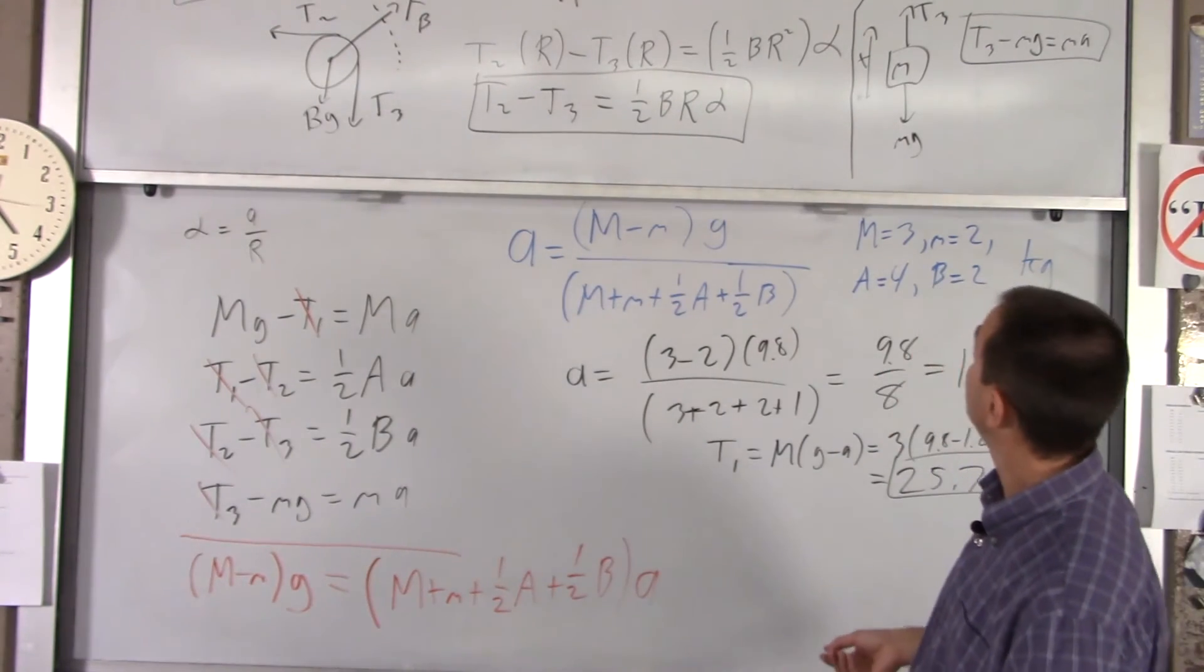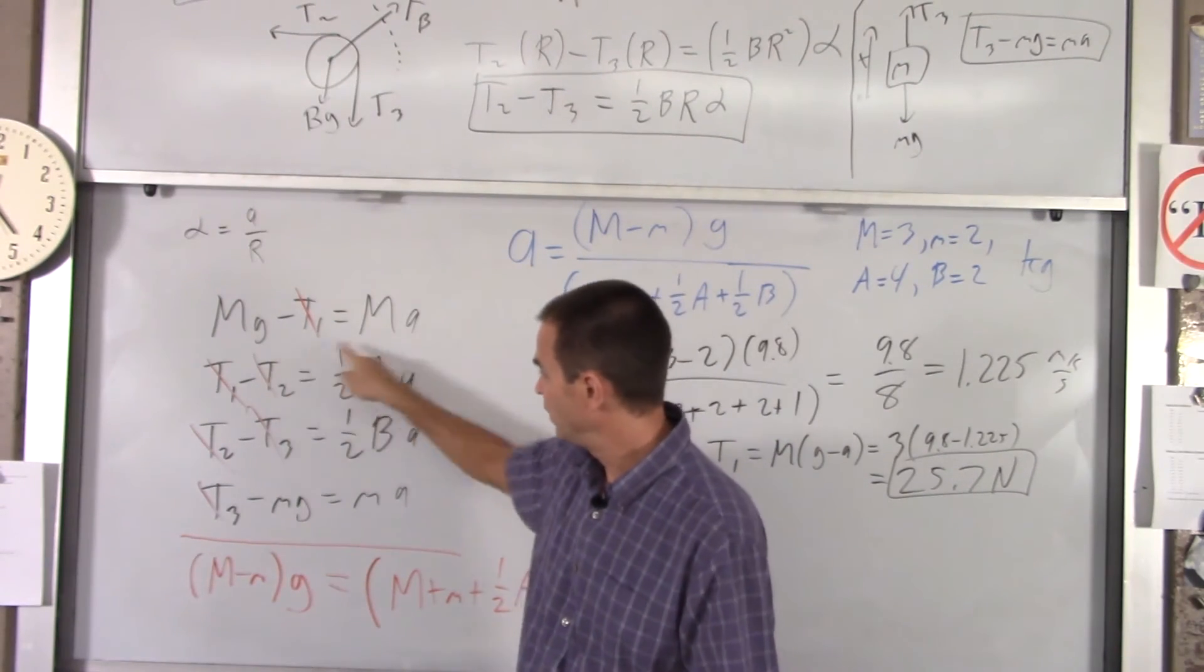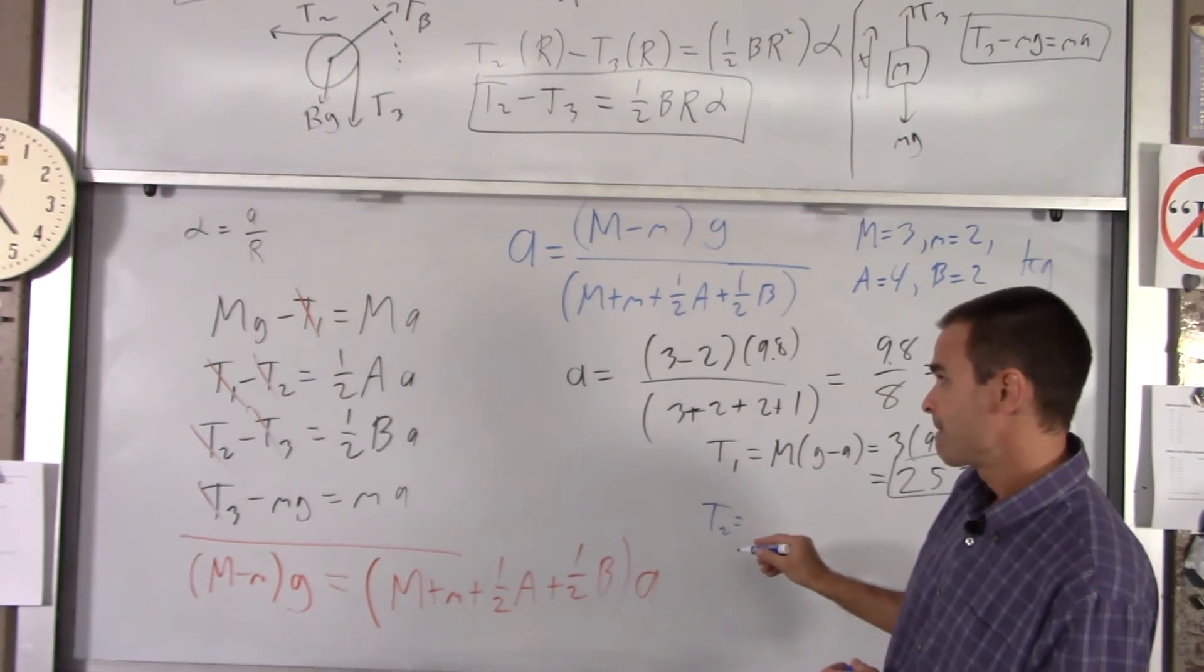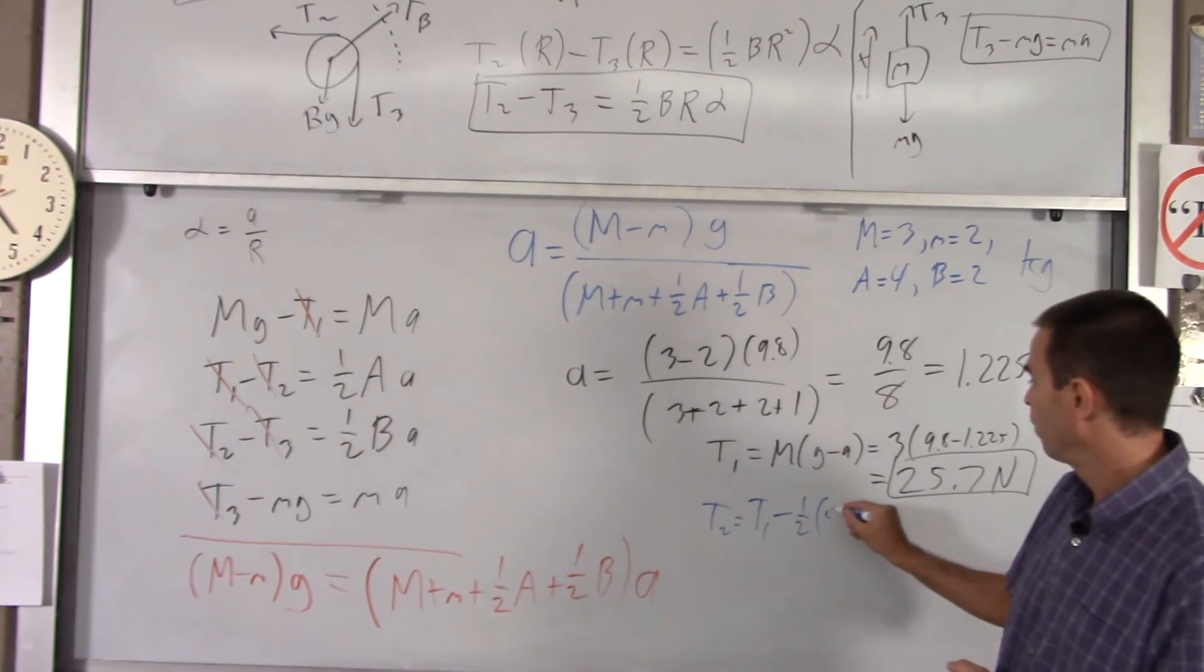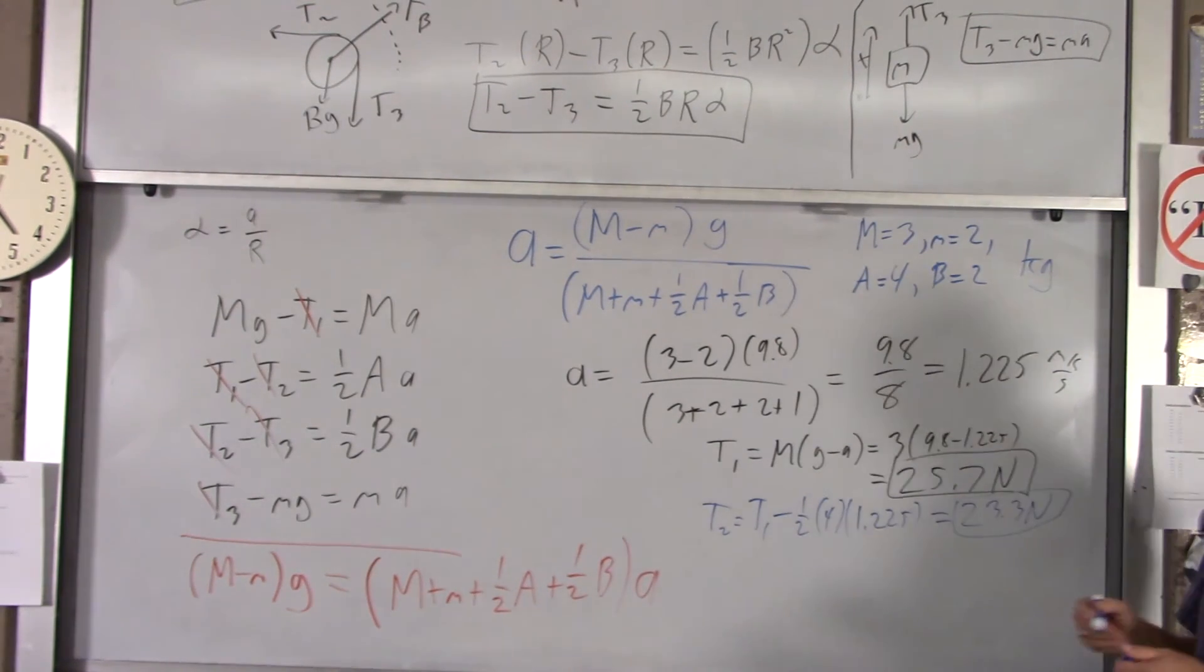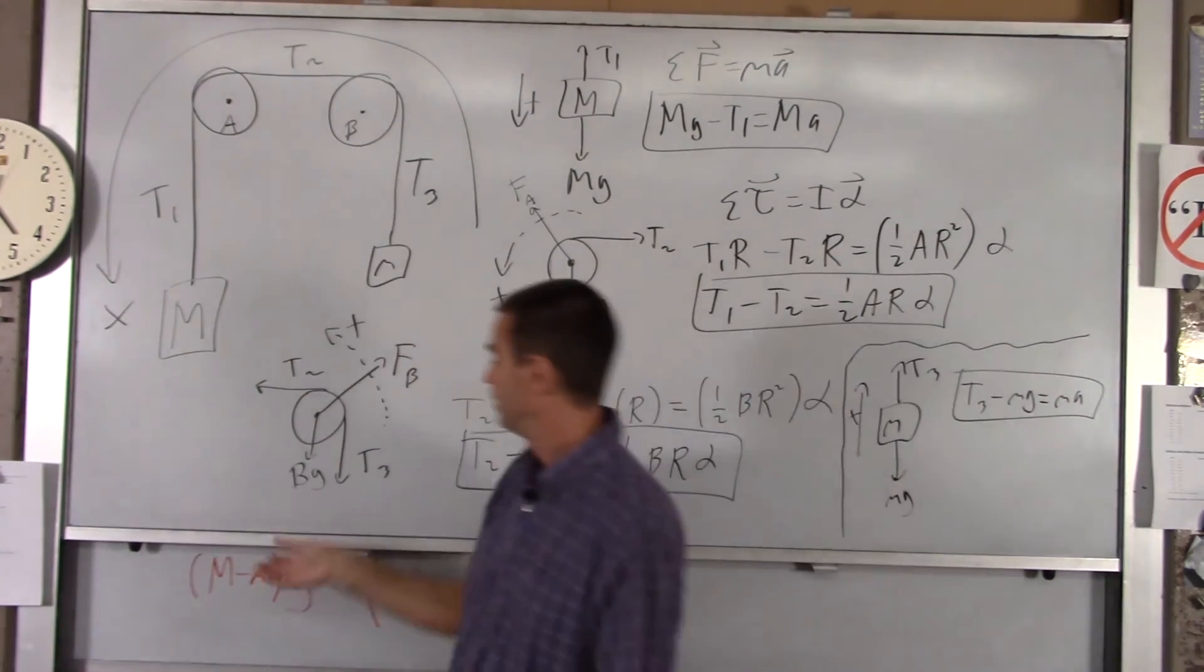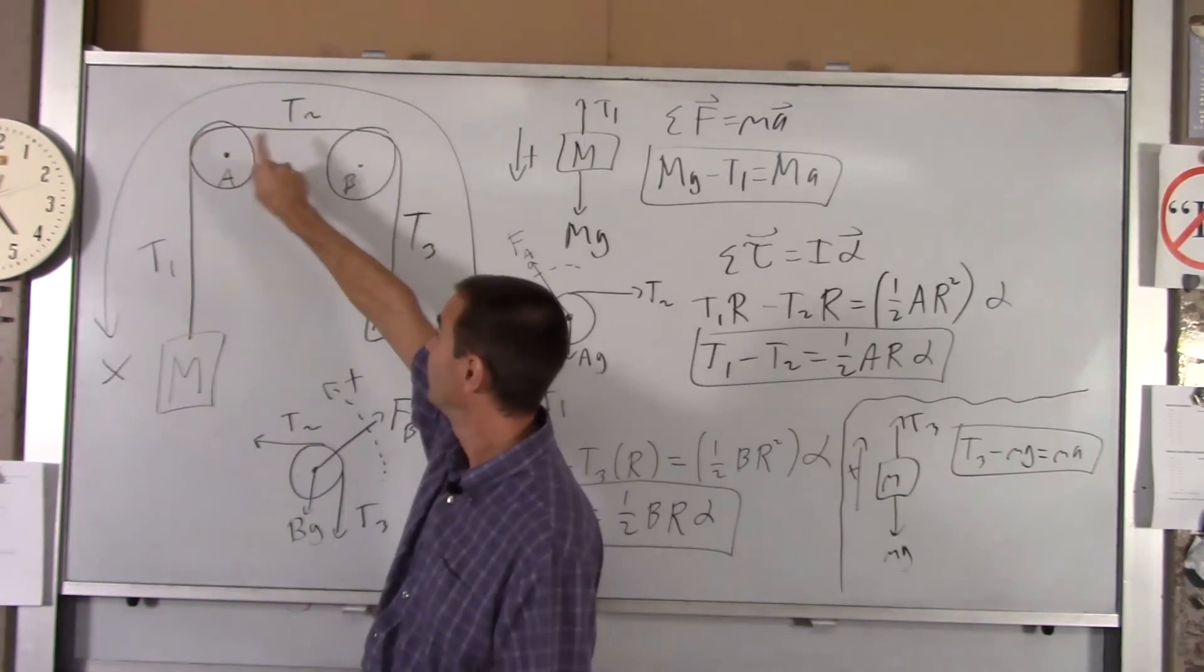For T2, you could use a couple equations here. I would suggest that one. You get T2 equals T1 minus 1/2 the mass of pulley A, which is 4, times the acceleration of our system, which is 1.225. So you plug that number in, you get 23.3. So T2 is indeed a little bit less than T1, like 2.4 Newtons less. T2 has got to be less than T1 because this thing is going to accelerate counterclockwise. So in order for that to happen, that guy has got to be less than that guy.